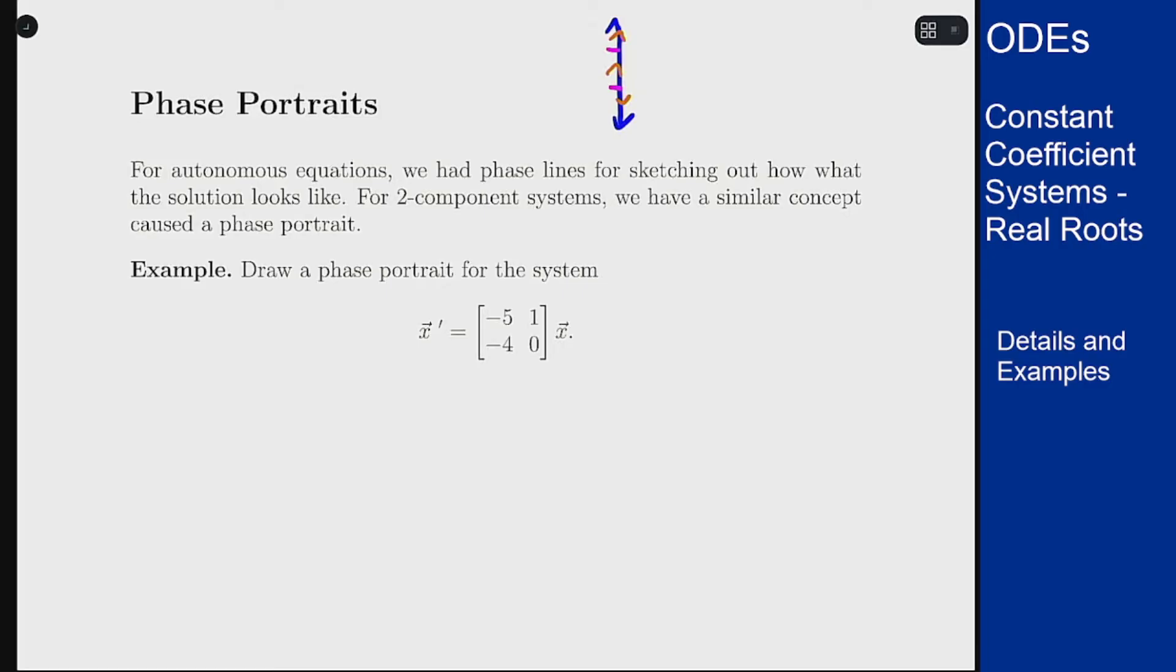For these two component systems when they are homogeneous like this, they are also autonomous because the derivative equals something on the right hand side that does not explicitly depend on t.